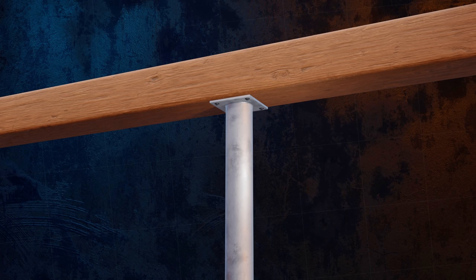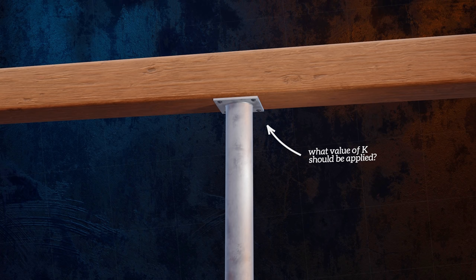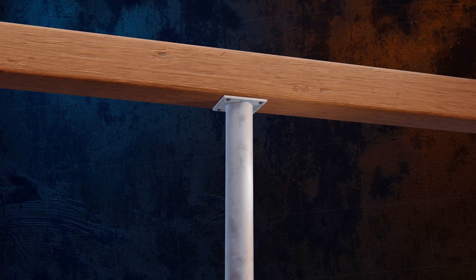In real life applications, it isn't always clear which effective lengths should be used, and the amount of restraint at the ends will depend on the stiffness of the adjacent members. Design codes often provide guidance on conservative assumptions that can be used for these scenarios.